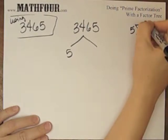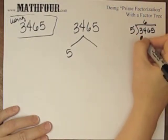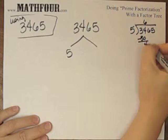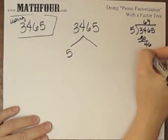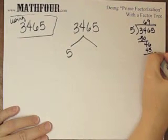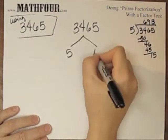5 goes into 34 6 times. 5 goes into 46 9 times. And 15 3 times, so 693.